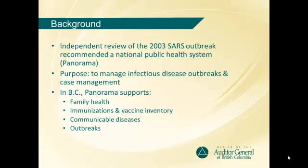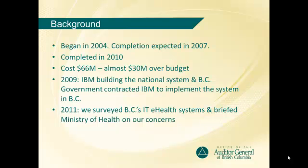The BC Ministry of Health led and managed the National Panorama project on behalf of all provinces and territories, while the provincial implementation focused on customizing and implementing modules specific to the needs of each province. In BC, Panorama supports public health functions such as family health, immunization, communicable disease management, and outbreak management. The Panorama initiative to build a system for all Canadian provinces and territories began in 2004, with expected completion by 2007. However, it was completed in 2010 at a cost of $66 million, almost $30 million over budget. In 2009, as IBM was building the national system, the BC government also contracted IBM to implement the system in BC. In early 2011, the Office of the Auditor General of BC surveyed a number of BC's eHealth IT systems to understand project progress and issues. One of these systems was Panorama.